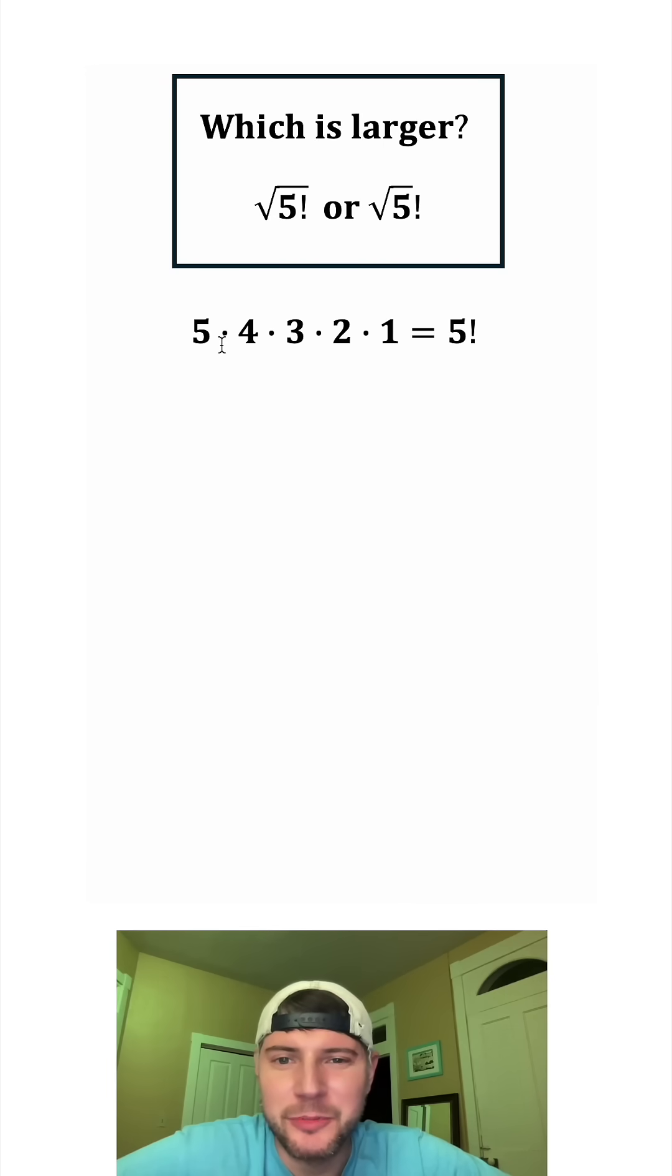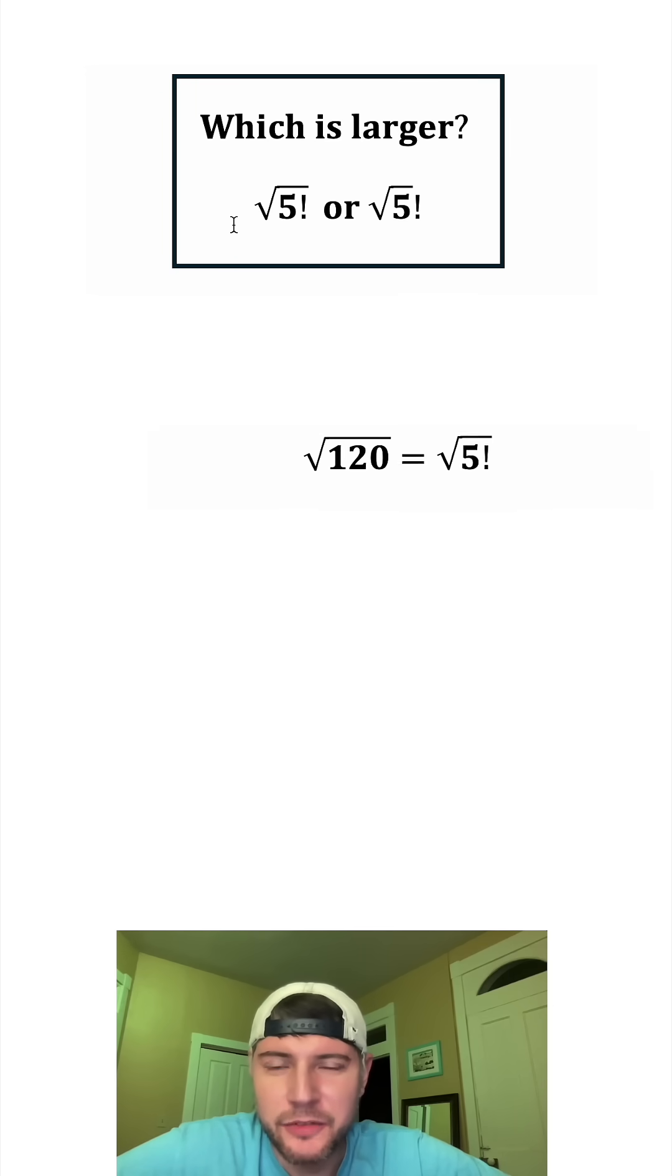We can simplify this. 5 times 4 times 3 times 2 times 1 is 120. And then to make it look just like this first term, we can square root both sides. And now we have an exact value for the square root of the quantity 5 factorial.